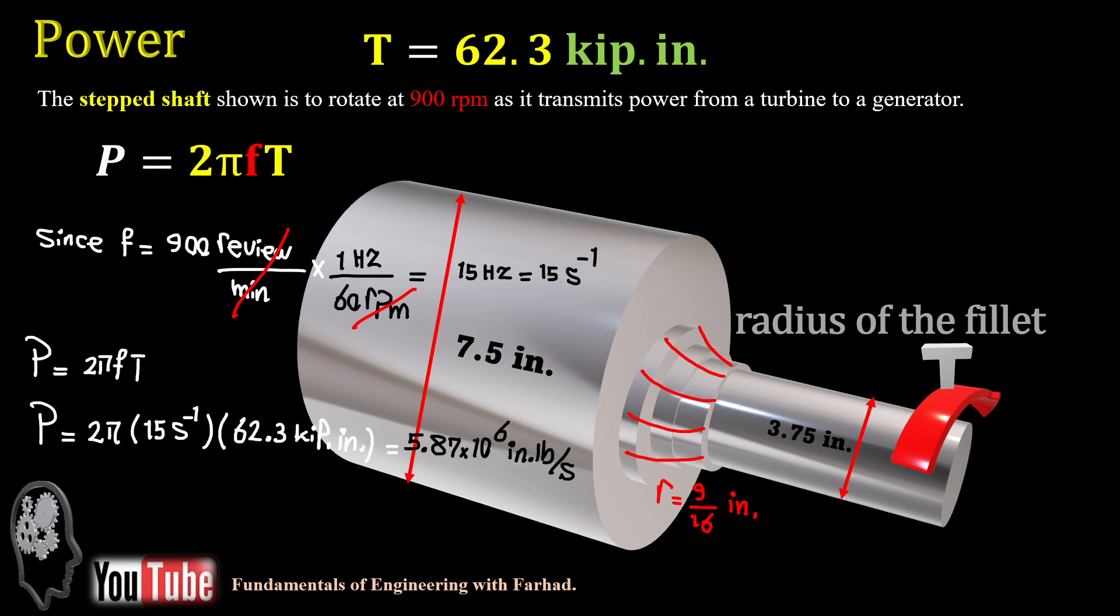Replace in the main equation of power, which is 2 pi times frequency times torsional torque. We calculate frequency based on rpm, then multiply by torsional torque. It gives us 5.87 times 10 to the 6 inch-pounds per second.